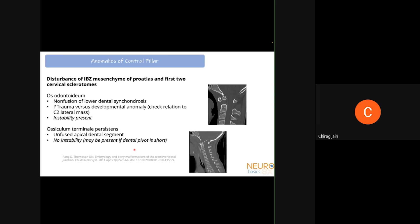Disturbance of the intervertebral body zone mesenchyme in the C1-C2 region — which normally forms the upper and lower dental synchondroses rather than discs — leads to os odontoideum, a non-fusion of the lower dental synchondrosis. The dens exists as a separate structure from the axis. There has been historical debate about whether os odontoideum is developmental or traumatic, but it is most likely developmental given its congenital associations. If the line of separation is above the C2 lateral mass, it is more likely a fracture.